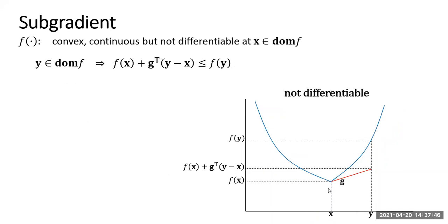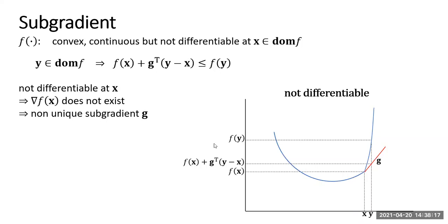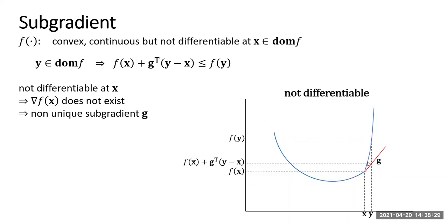Here is another case where at point x the function is still convex but not differentiable — it's continuous at x but not differentiable. g is a sub-gradient. Since this is not differentiable at x, the gradient del f(x) does not exist, and therefore the sub-gradient at x is not unique. In this same situation, this point x looks like the global minimum of this convex function. But here it's not the global minimum. Again at this point x, f(x) is continuous but not differentiable, and this g is the sub-gradient, which is again not unique.